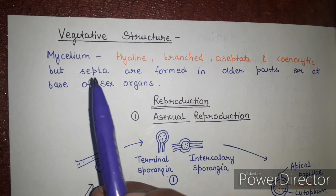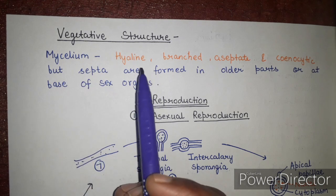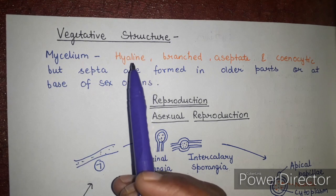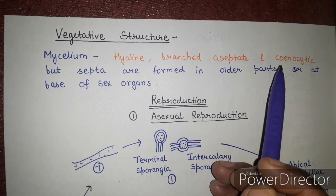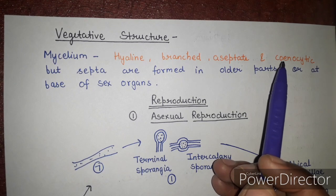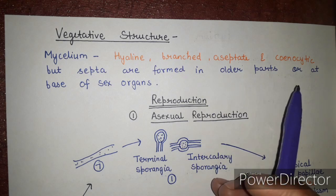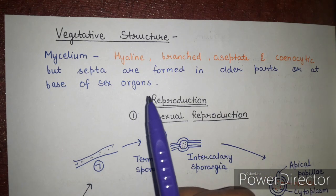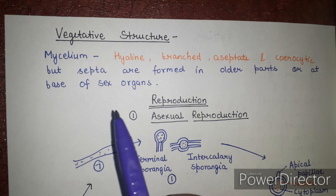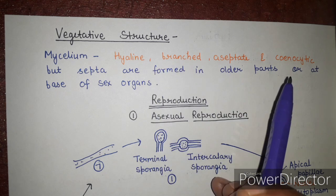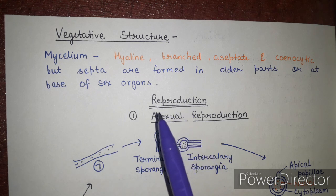Next we will discuss the vegetative structure of Pythium. It basically consists of a mycelium that is hyaline (transparent), branched, and aseptate — meaning septa are absent. It is coenocytic, containing many nuclei. However, septa are formed in the older parts or at the base of sex organs.